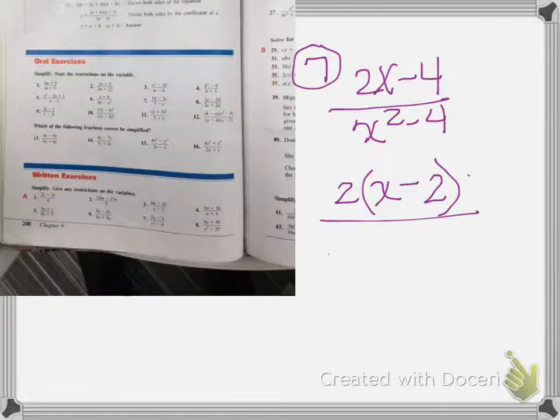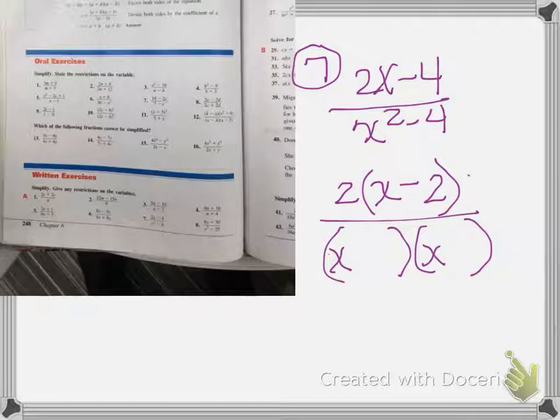Then on the bottom we have x squared minus 4. I can factor x and x, and then negative 2 times positive 2 will get me 4.